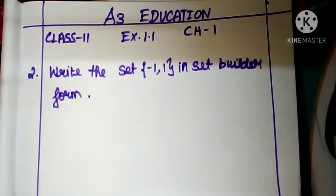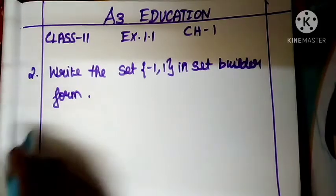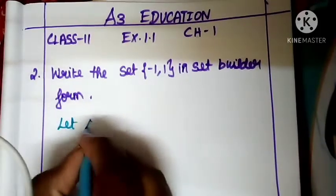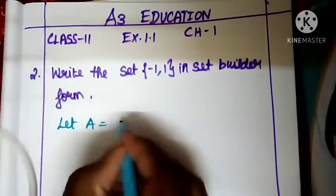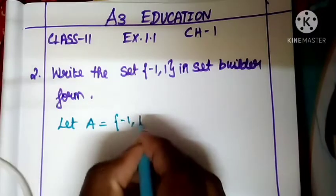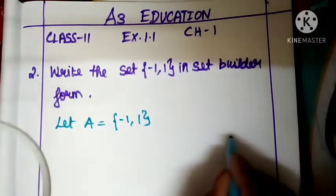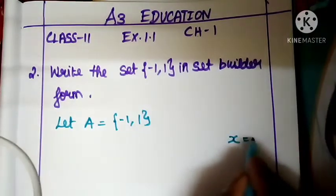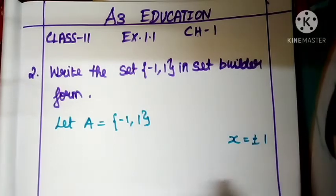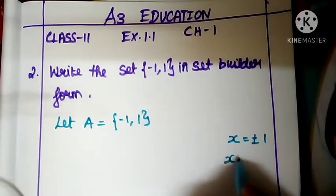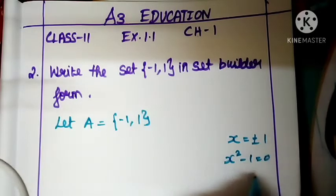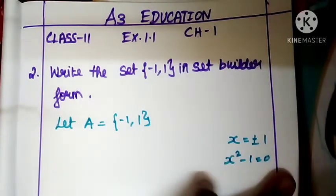Let A be equal to the set containing minus 1 and plus 1. Here, x is equal to plus or minus 1. If you refer to x squared minus 1 equals zero, then x is equal to plus or minus 1.